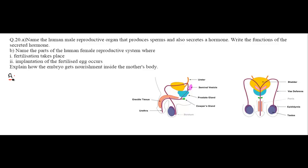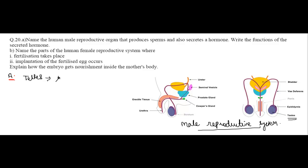Let's see the answer of this question. This picture is the male reproductive system. Let's see which organ produces sperms. The organ is testis — you can see these are the testis. This testis produces sperms and also secretes the male hormone called Testosterone.